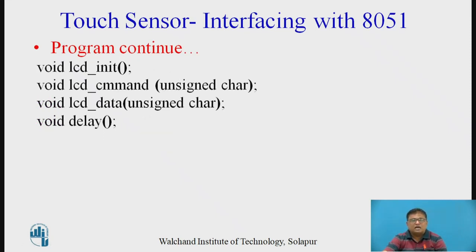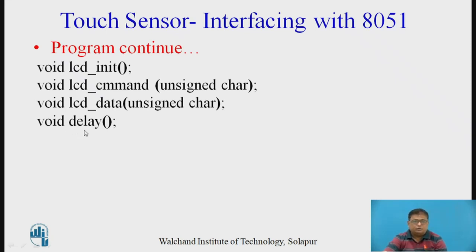As far as the program is concerned, four different functions are defined. One is to initialize the LCD. The second function is defined to send commands to the LCD. Similarly, another function LCD_data is used to send data, and there is also a delay subroutine.